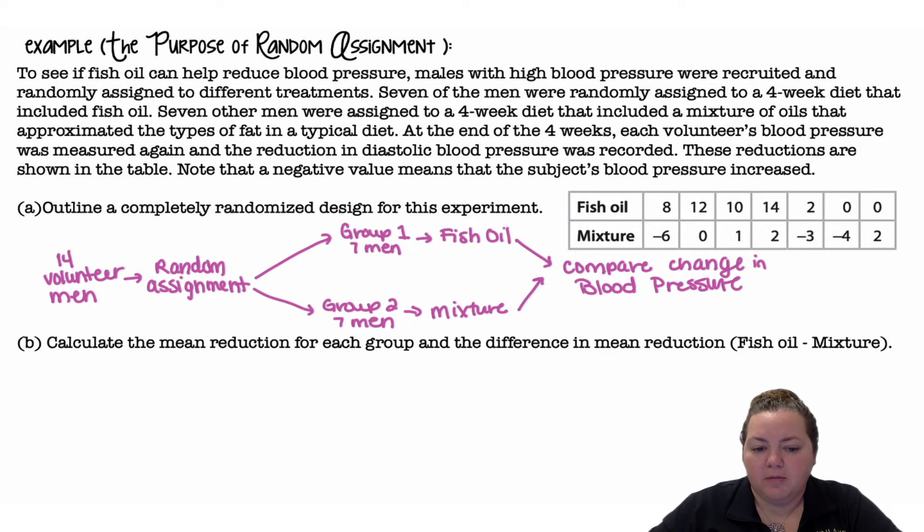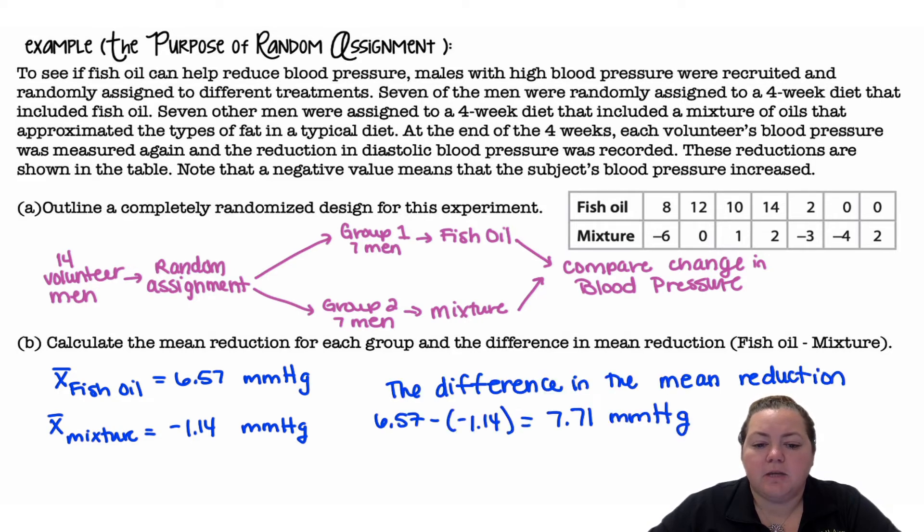Part B: Calculate the mean reduction for each group and the difference in the mean reduction, fish oil minus mixture. So the mean for fish oil, I took 8, 12, 10, 14, 2, 0, and 0, added them up and divided by 7, I got 6.57. And then the mean x-bar for mixture, I added them up and divided by 7, I got negative 1.14. So the difference in the mean reduction, fish oil minus the mixture, is 7.71.